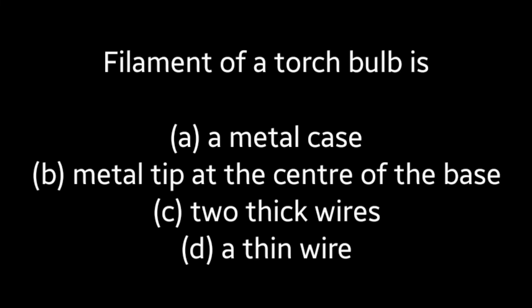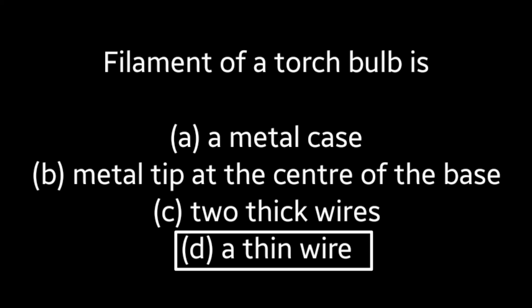Next question: Filament of a torch bulb is (A) a metal case, (B) metal tip at the center of the base, (C) two thick wires, (D) a thin wire. Answer is Option D: a thin wire.